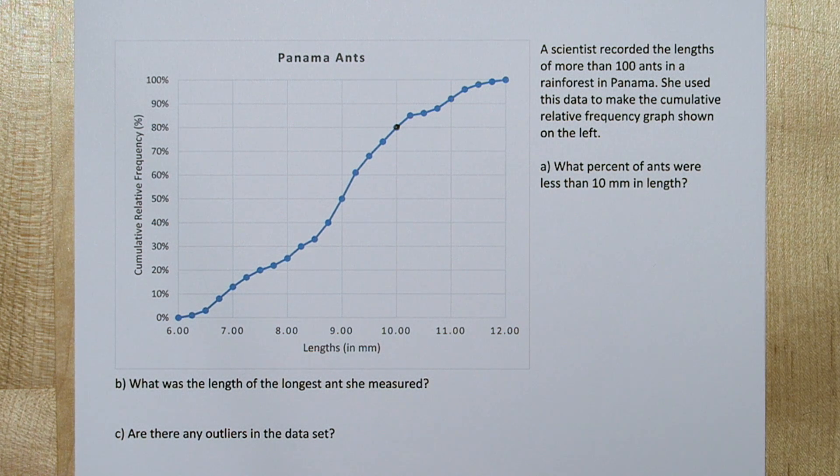A cumulative relative frequency plot is really a graphical display of percentiles. They're also called ogives.